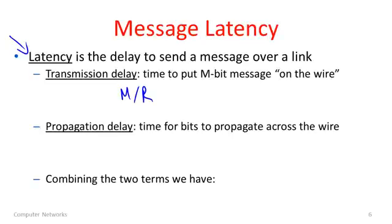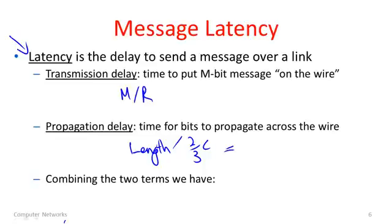The second component is what's called the propagation delay. Once bits get onto the wire, they have to travel from the beginning of the wire to the other side. It takes a finite amount of time for signals to propagate down the wire, related to its length. The propagation delay is given by the length divided by the speed at which signals propagate in the media. For most wires and fiber optic media, two thirds of the speed of light is a good approximation; for wireless, close to the speed of light. We'll often refer to this as d seconds. So combining these two things, the latency to send a message over a link is M divided by R plus d.